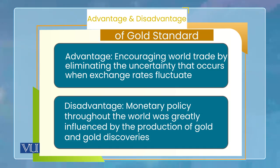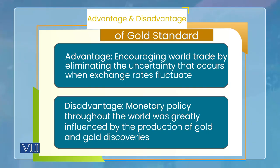Gold standard کا advantage یہ ہے کہ exchange rate کی uncertainty ختم ہو جاتی ہے۔ چونکہ exchange rate goods and services کی real value میں role play کرتا ہے — مثلاً ہمارے ملک میں Chinese product کی value اس product کی China میں price کو yuan to PKR exchange rate سے multiply کر کے نکلتی ہے — اگر exchange rate uncertain ہو تو trade متاثر ہوتی ہے۔ جب ساری currencies gold سے convertible ہوں تو یہ uncertainty ختم ہو جاتی ہے اور international trade زیادہ smooth ہو جاتی ہے۔